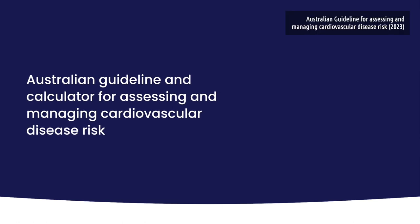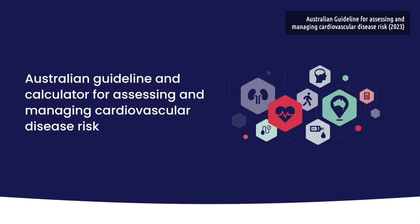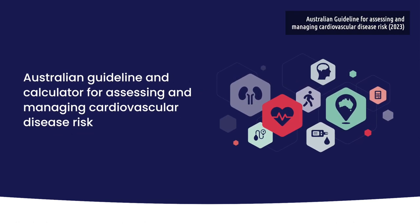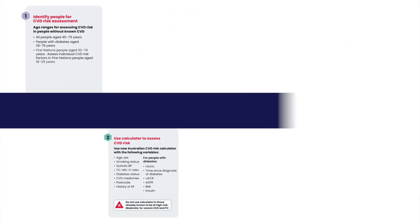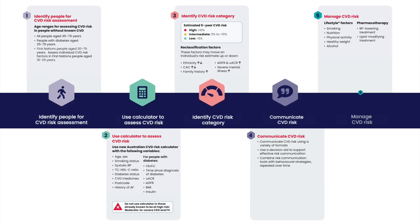We know that the demographics of people at high risk are very different now to what they were 20, 30, 40 or 50 years ago, and the population within Australia is different to that from a suburb of Boston some time ago. So there was a real need to update not just the calculator but the guideline as a whole — to make sure that we've got the right people being assessed, getting the right information about their risk, and getting the right management if they're assessed as being high or intermediate risk.